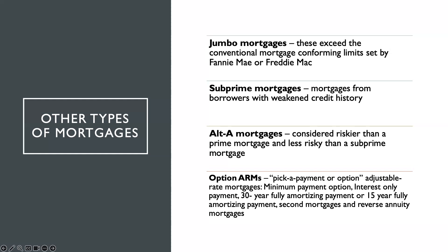Second, we have subprime mortgages. These types of mortgages come from borrowers that had a weak credit history. A few years back, we all felt it when the US market suddenly crashed because of the subprime mortgage.